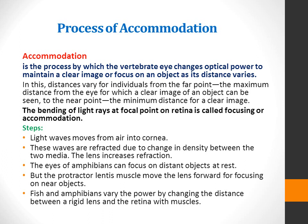Now we will discuss accommodation of the amphibian eye. Accommodation can be defined as adjusting focus for near and distant objects. More precisely, it is the process by which the vertebrate eye changes optical power to maintain a clear image or focus on an object as its distance varies — from the far point, the maximum distance for which a clear image can be seen, to the near point, the minimum distance for a clear image.